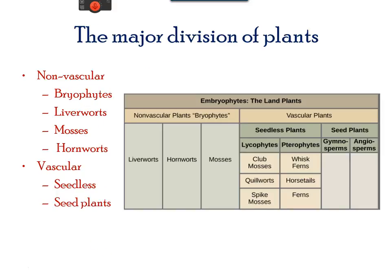Land plants are classified into two major groups according to the presence or absence of vascular tissue. Plants that lack vascular tissue are referred to as non-vascular plants, including bryophytes, liverworts, mosses, and hornworts. Vascular plants include seedless and seed plants. Vascular tissue is composed of xylem that transports water and phloem that transports nutrients within the plant.